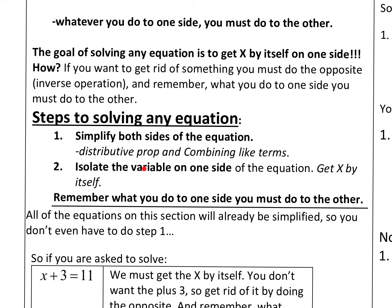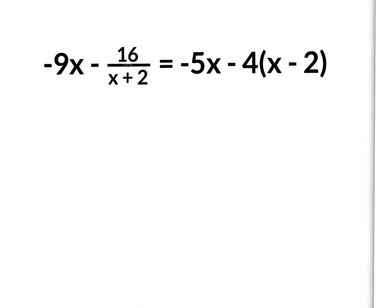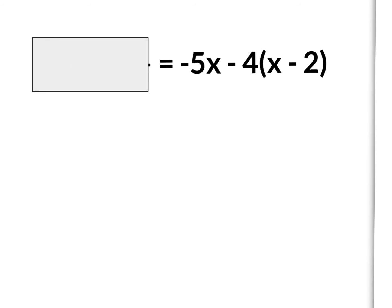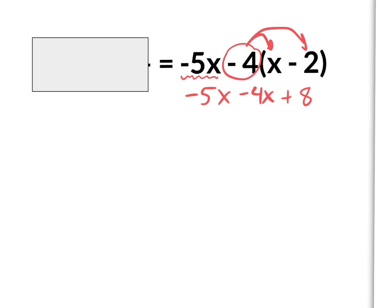After that you worry about your goal: getting the variable by itself on one side. Let's simplify each side one at a time. On the left side I have a fraction and a negative 9x — I can't subtract these without a common denominator, so no distributive property there. On the right side there is distributive property, so I'll focus there. I'm going to distribute: negative 4 times x is negative 4x, and negative 4 times negative 2 is positive 8. I'll bring down the minus 5x.